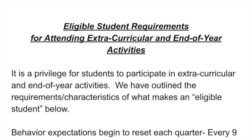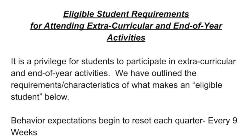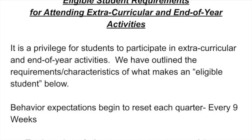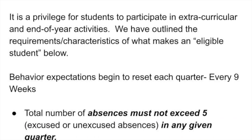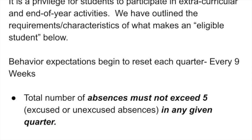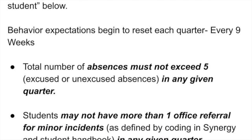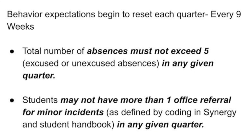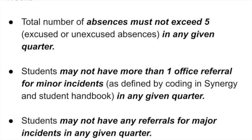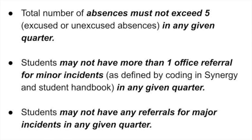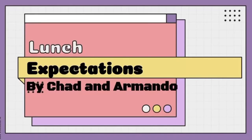Remember, there are some requirements to attend the end of the year activities. It's a privilege for students to participate in extracurricular and end of year activities, so these are the requirements of what makes you eligible. The behavior expectations will reset each quarter, so every nine weeks. Your total number of absences must not exceed five excused or unexcused absences in any given quarter. Students cannot have more than one office referral for a minor incident — things like dress code or tardies — in any given quarter, and students may not have any referrals for major incidents in any given quarter.